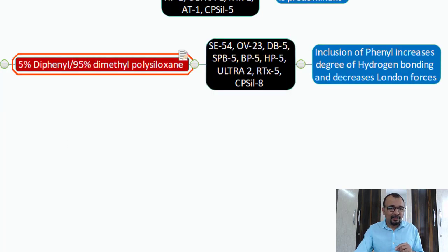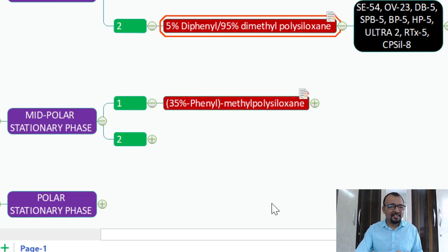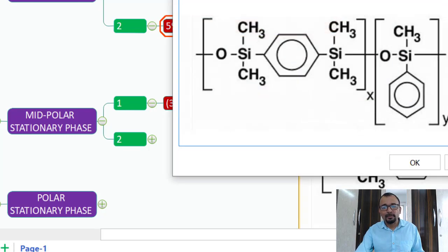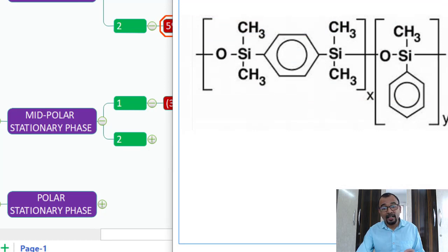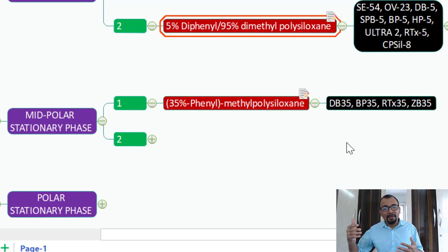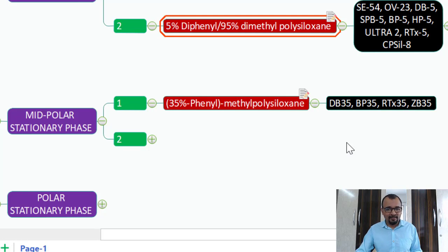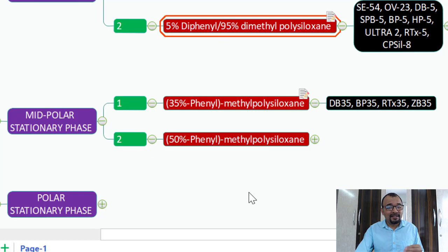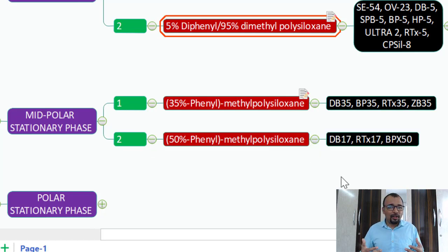Moving to the mid-polar stationary phase: the example here is 35% phenyl and the rest methyl polysiloxane. As the number of phenyl groups increases, you get more interaction through hydrogen bonding. Compared to BP5, the DB35 or BP35 will have a good amount of retention for compounds that can develop hydrogen bonding. The 50% phenyl phase will retain molecules with a good amount of hydrogen bonding even further; commercial examples include DB17, RTX17, and BPX15.